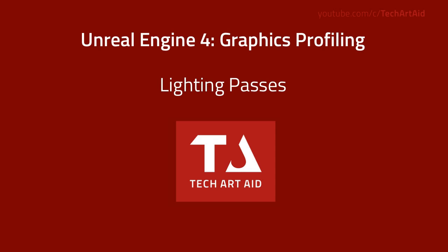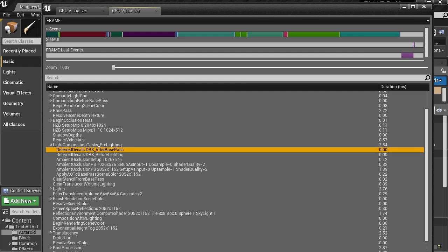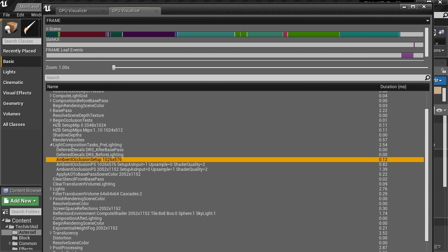Let me begin with lighting passes, because they will probably be the most heavy part in your scene unless you go crazy with geometry or have other optimization issues like particles. The mysterious Light Composition Tasks pre-lighting is responsible for deferred decals, but also for ambient occlusion. That's interesting to know, because you may think that ambient occlusion is a post-process operation — yes, it is — but it's not in the post-processing category here. Instead, you can find it in Light Composition Tasks.